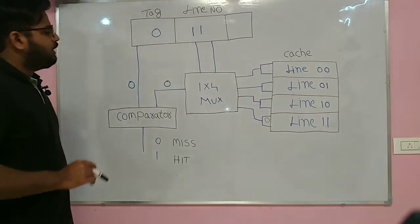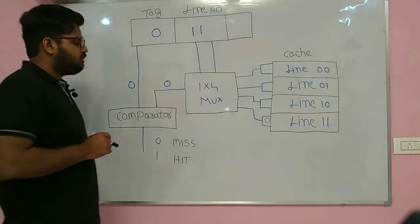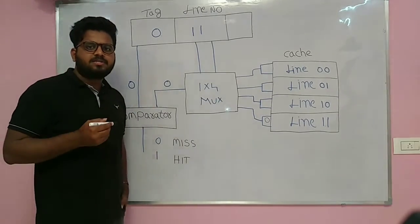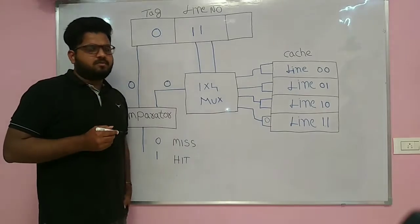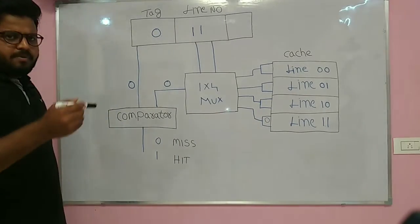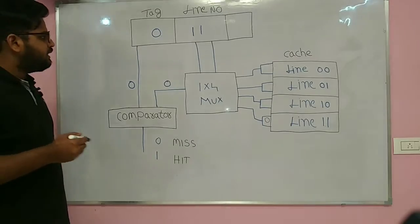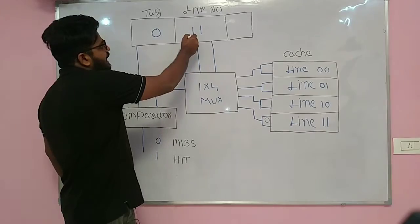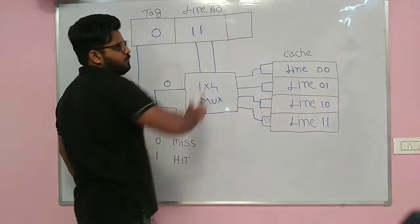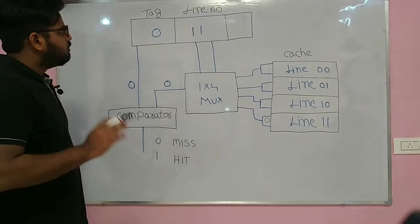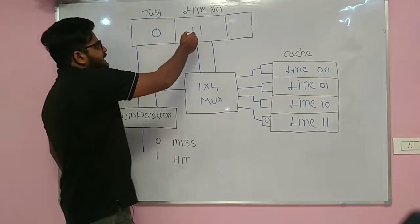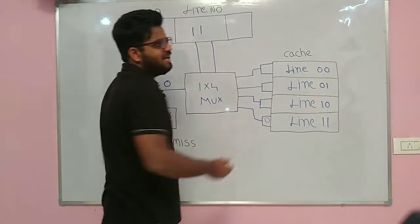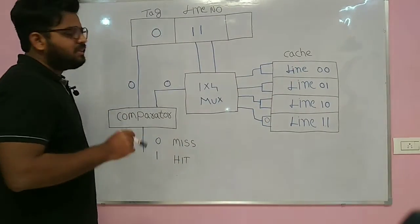When our CPU generates an address, before accessing main memory we have to go to cache memory and get the required word. Before accessing main memory, we have to access cache memory. In direct mapping, we have tag, line number, and word offset. Once we get the address, we extract the line number.